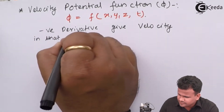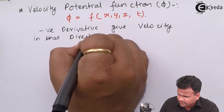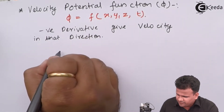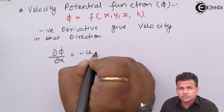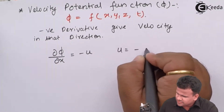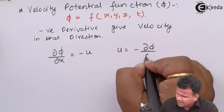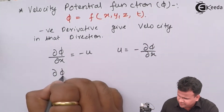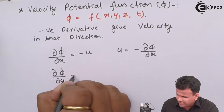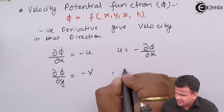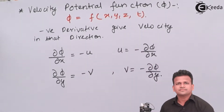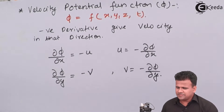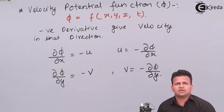So, if phi is differentiated by x, that will give you minus u, or u can be given as minus dou phi by dou x. Similarly, if you differentiate phi with respect to y, that will give you minus v, so v is equal to minus dou phi by dou y. It is a function of space and time whose negative derivative gives us velocity in that particular direction.